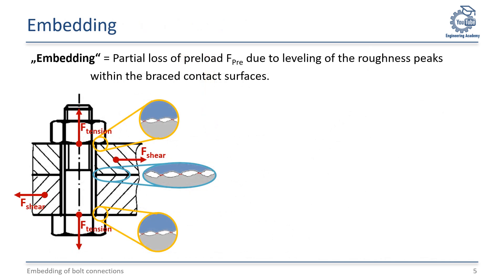This phenomenon also occurs at any loaded bolt connection. That is called embedding. Embedding specifically refers to a partial loss of the assembly preload force FPRE, caused by the flattening of surface roughness peaks in the clamped contact areas.